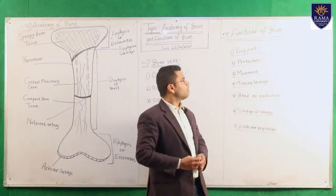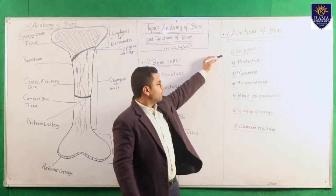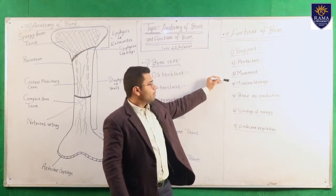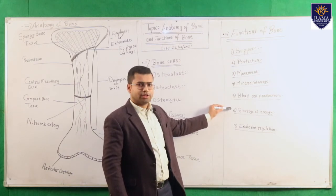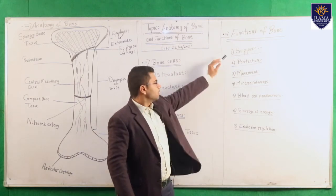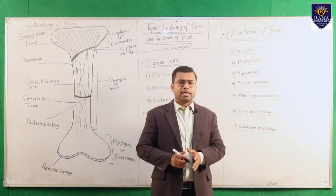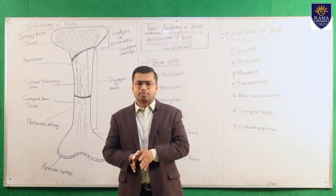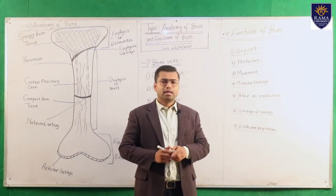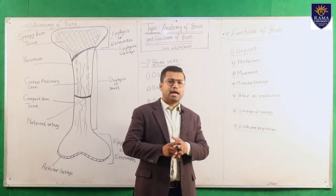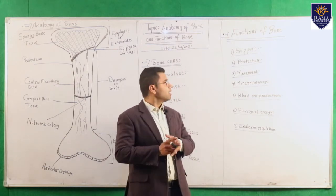There are seven major functions of bone: support, protection, movement, mineral storage, blood cell production, storage of energy, and endocrine regulation. The first function is support — the bone provides a framework for attachment, such as the attachment between muscle and bone.